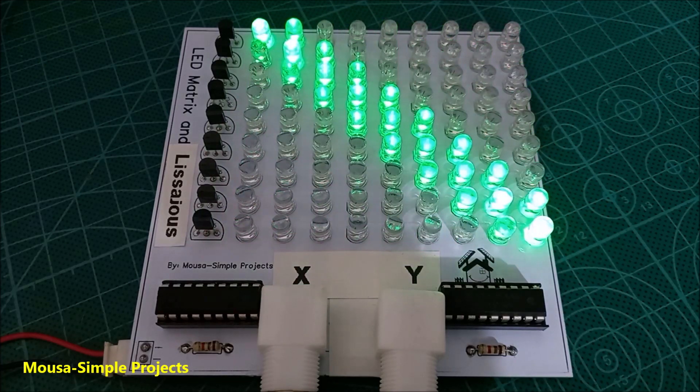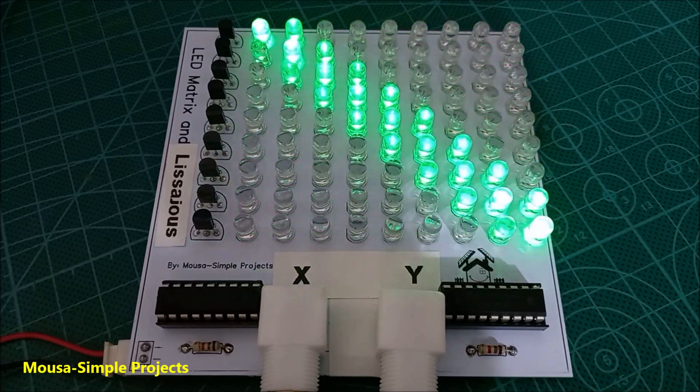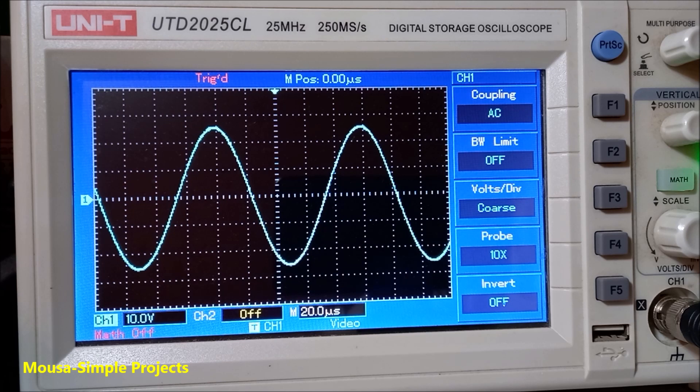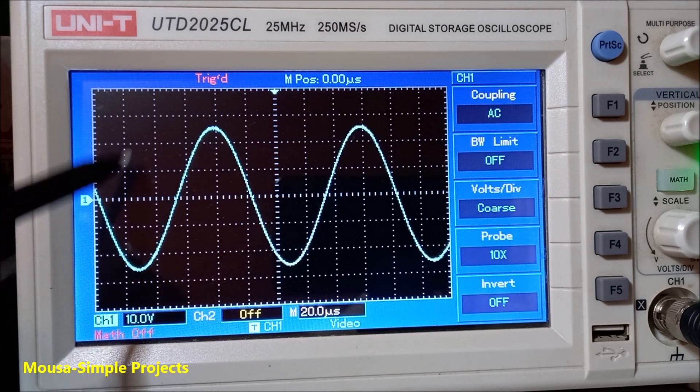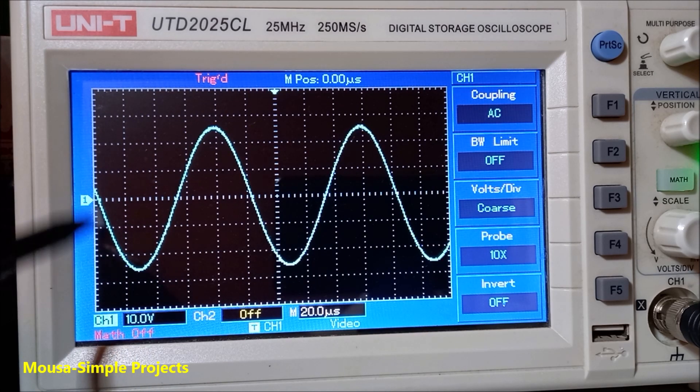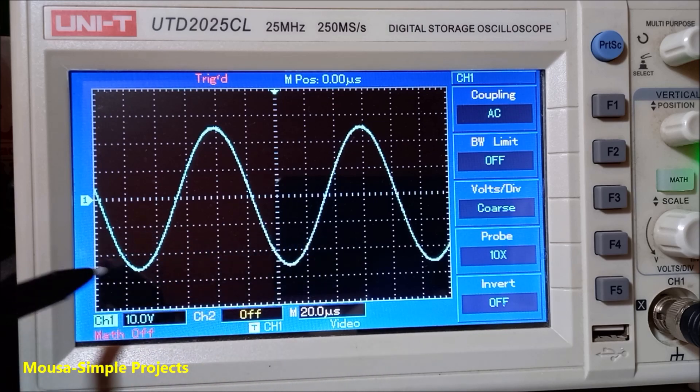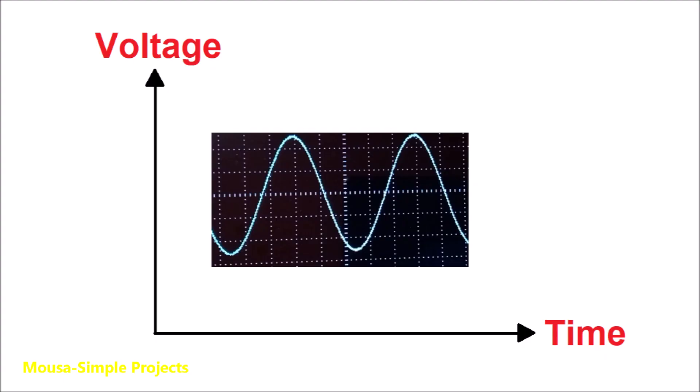In this video, I want to talk about Lissajous patterns and how to make a simple circuit to drive it. The waveform that appears on the scope display shows you the relationship between the voltage, which is the y-axis, and the time, which is the x-axis. So it tells you the exact voltage at any given time.